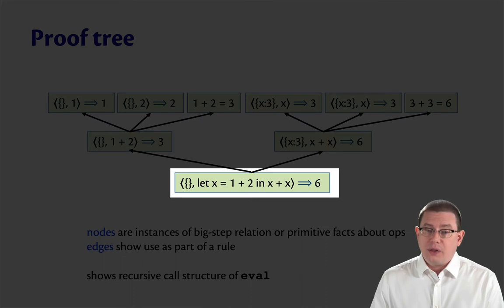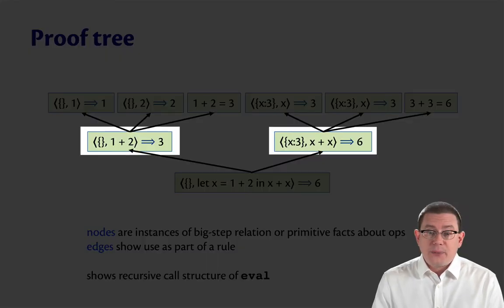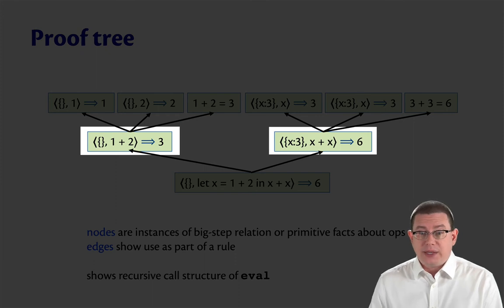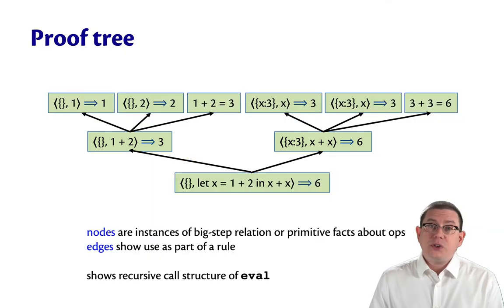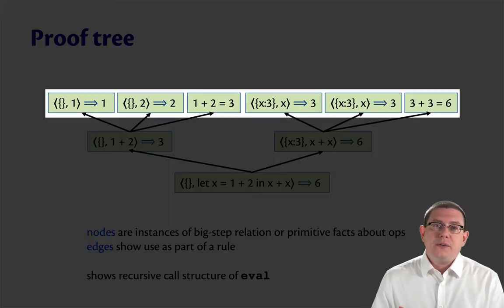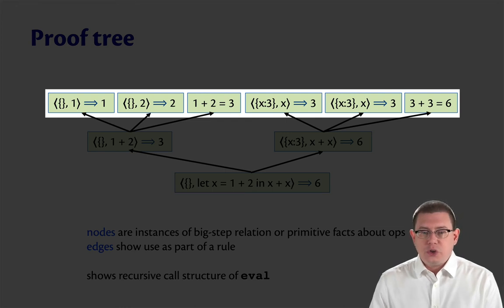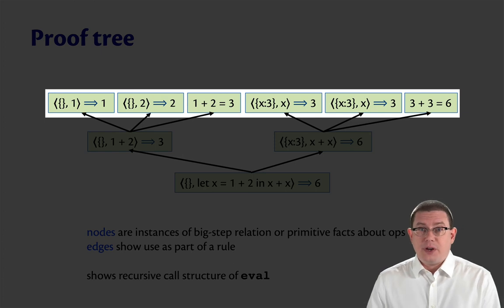First, you call eval on the let expression. That's going to call eval on the binary operators that are part of the binding and body expressions. And each of those is going to call eval then on those values, one or two, or variables X, as well as evaluating the primitive operation.